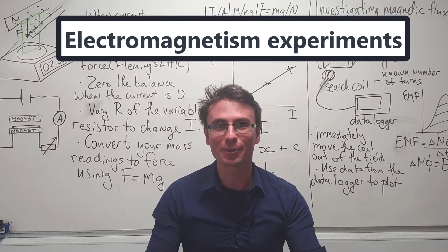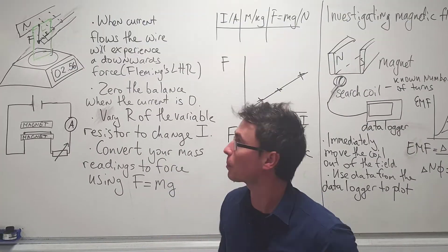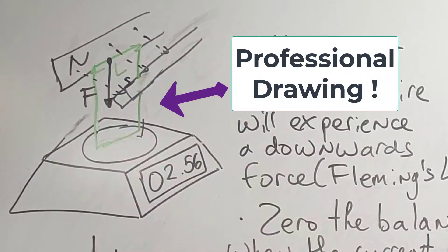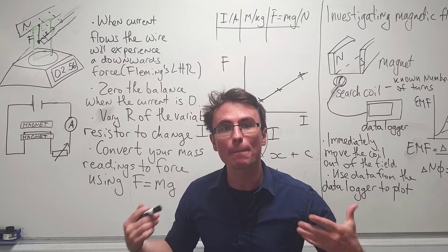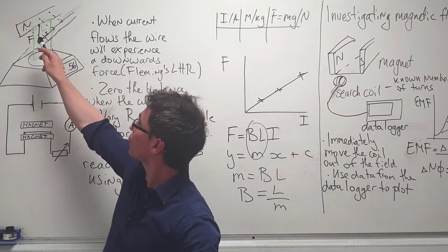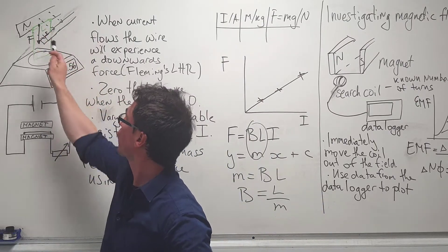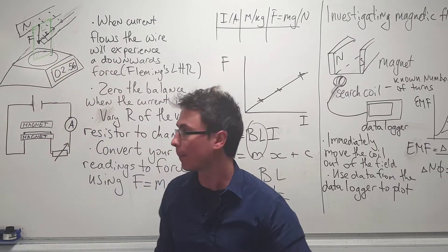Let's revise experimental skills in electromagnetism. We have this experiment in which we have a square loop of wire that's been placed onto a top pan balance.